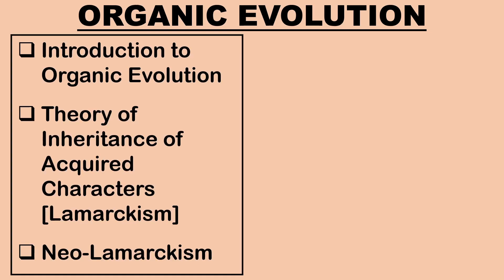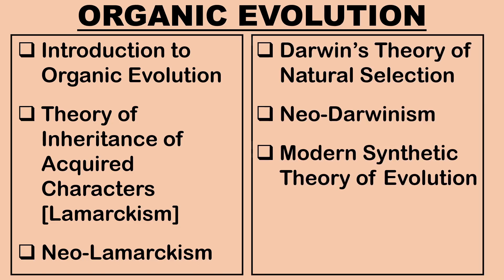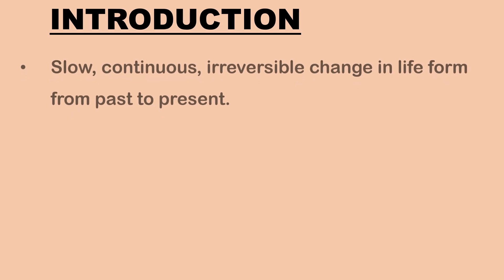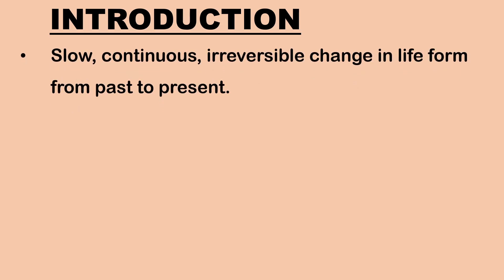Hello, in today's video we shall learn in detail about organic evolution. By the end of this video you'll have a clear understanding about Lamarckism, Darwinism and modern synthetic theory of evolution. Organic evolution can be defined as a slow, continuous and irreversible change from the simple, less organized forms of life to the present day complex and highly organized forms of life.